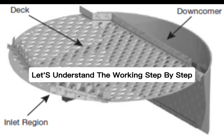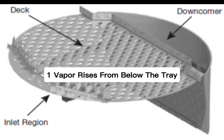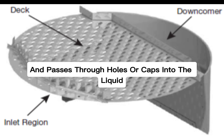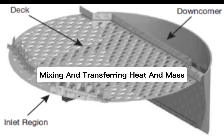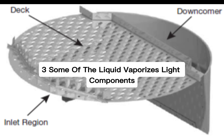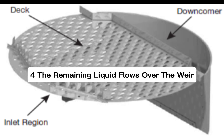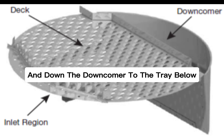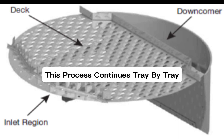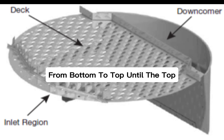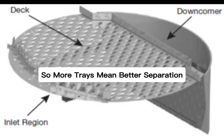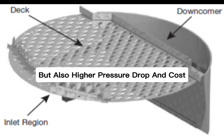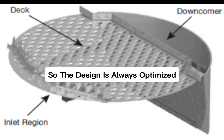How do trays work? First, vapor rises from below the tray and passes through holes or caps into the liquid. The vapor bubbles through the liquid, mixing and transferring heat and mass. Some of the liquid vaporizes — light components — and some vapor condenses — heavy components. The remaining liquid flows over the weir and down the downcomer to the tray below. This process continues tray by tray, from bottom to top, until the top vapor and bottom liquid reach the required composition. More trays mean better separation, but also higher pressure drop and cost, so the design is always optimized.